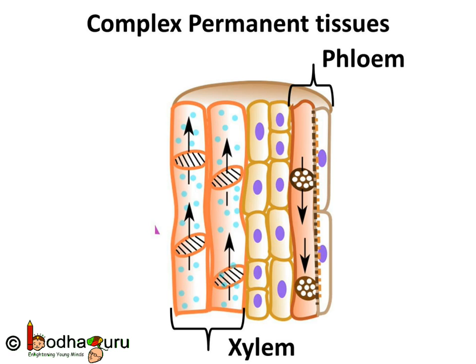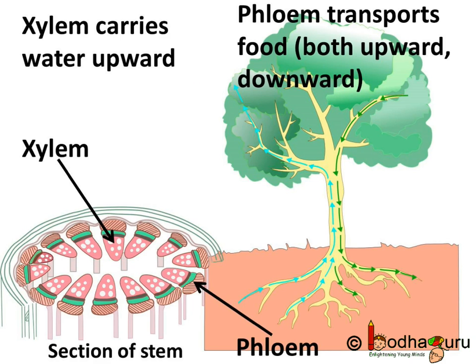Xylem and phloem are examples of such complex tissues. Xylem carries water and minerals absorbed by the roots upward to different parts of the plant, specifically the leaves. Phloem transports the food produced during photosynthesis from the leaves to the different parts of the plant, carrying it in both upward and downward directions. Both xylem and phloem are conducting tissues and constitute a vascular bundle.